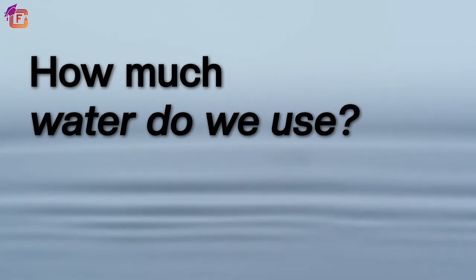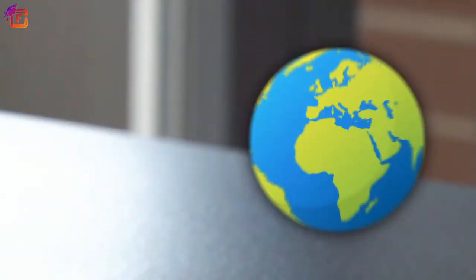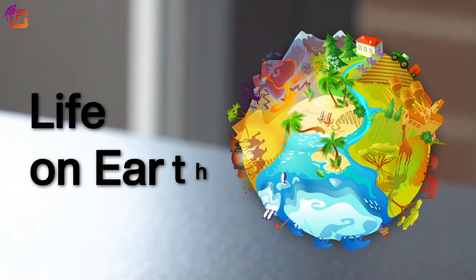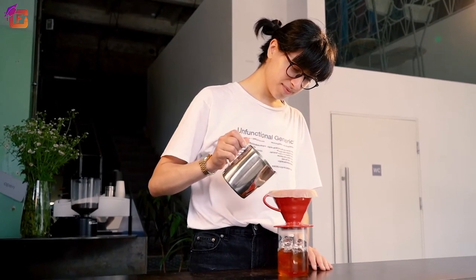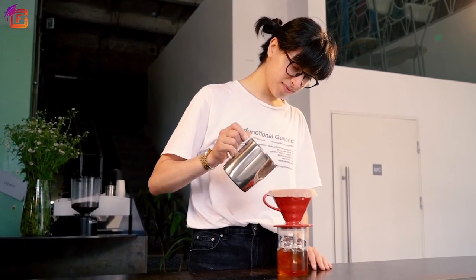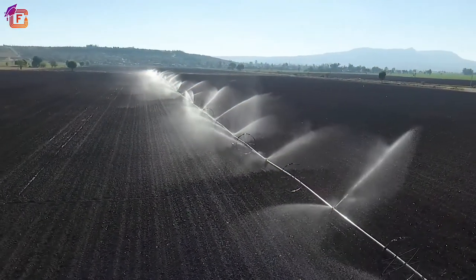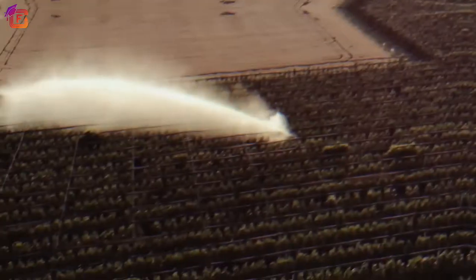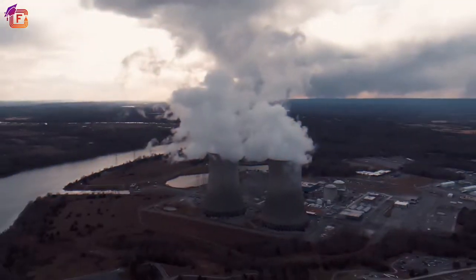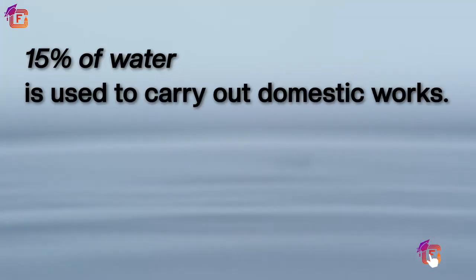In this chapter we will learn about how much water we use. Water is the fundamental and most essential substance required for the existence of life on earth. Water is required to carry out many activities essential for day-to-day life. Water is used for different purposes such as domestic activities, agriculture, industries, and to generate electricity.